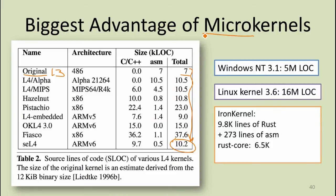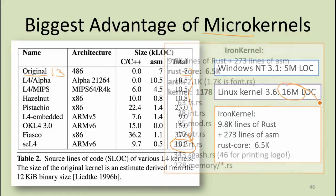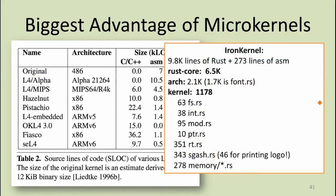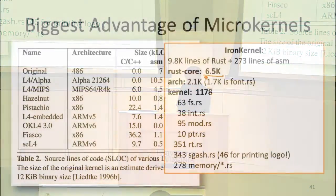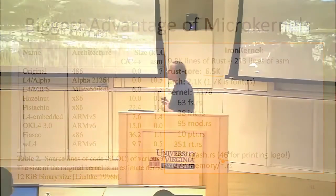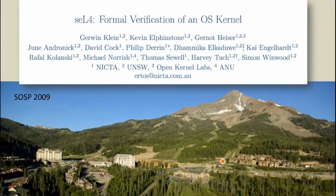By comparison, Linux is up to about 16 million lines of code running in kernel mode. The kernel being small means fewer bugs, and it's small enough that you can actually reason about the whole thing. A version of L4 — not the one running on your phone — has been formally verified: it's small enough that you can actually prove properties about the entire kernel.